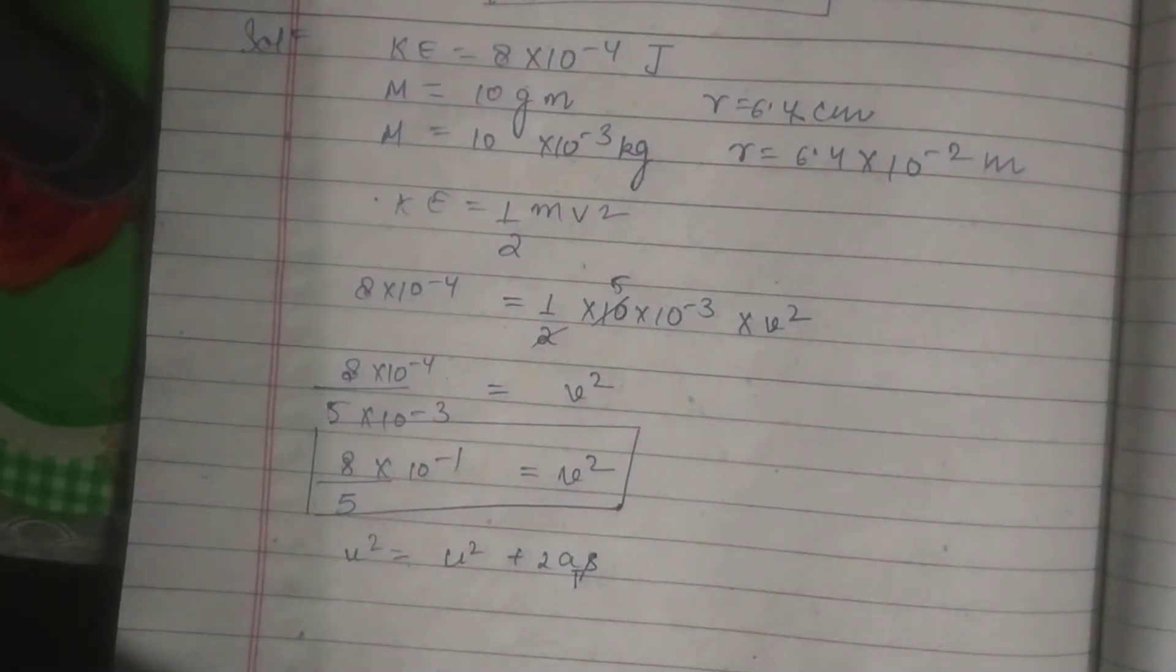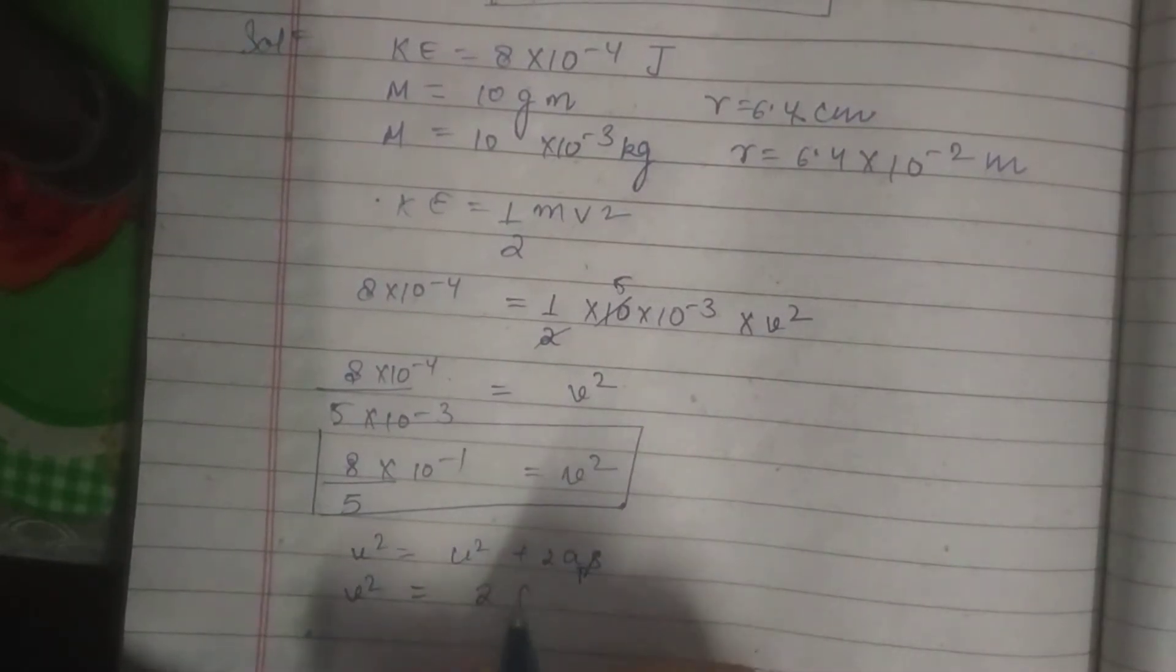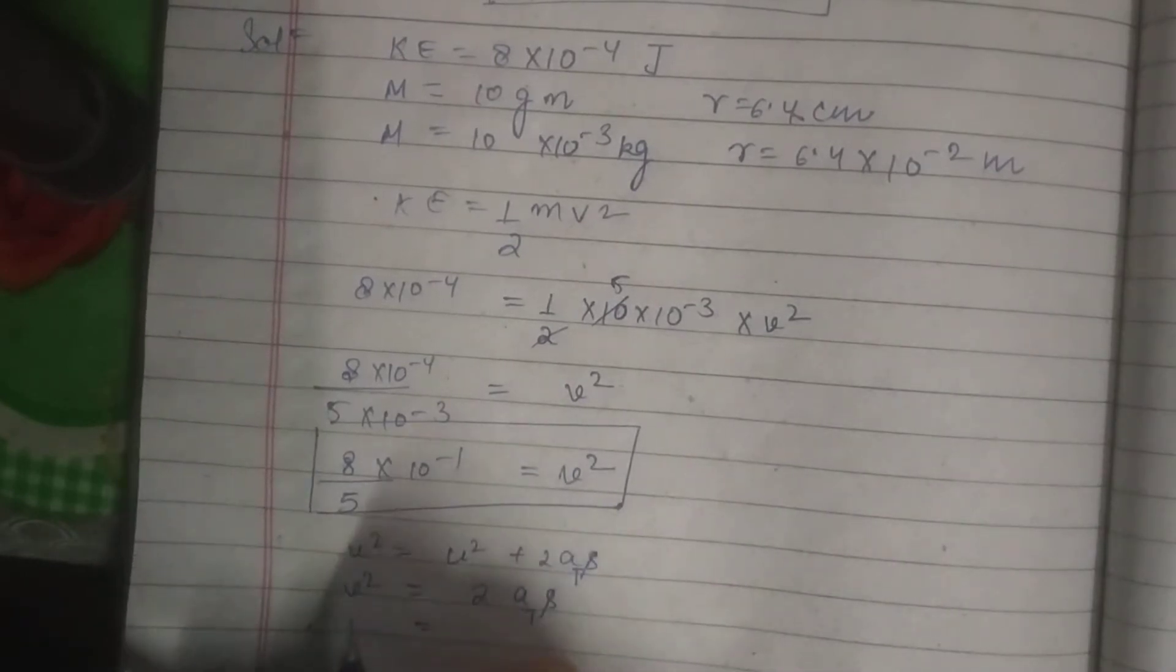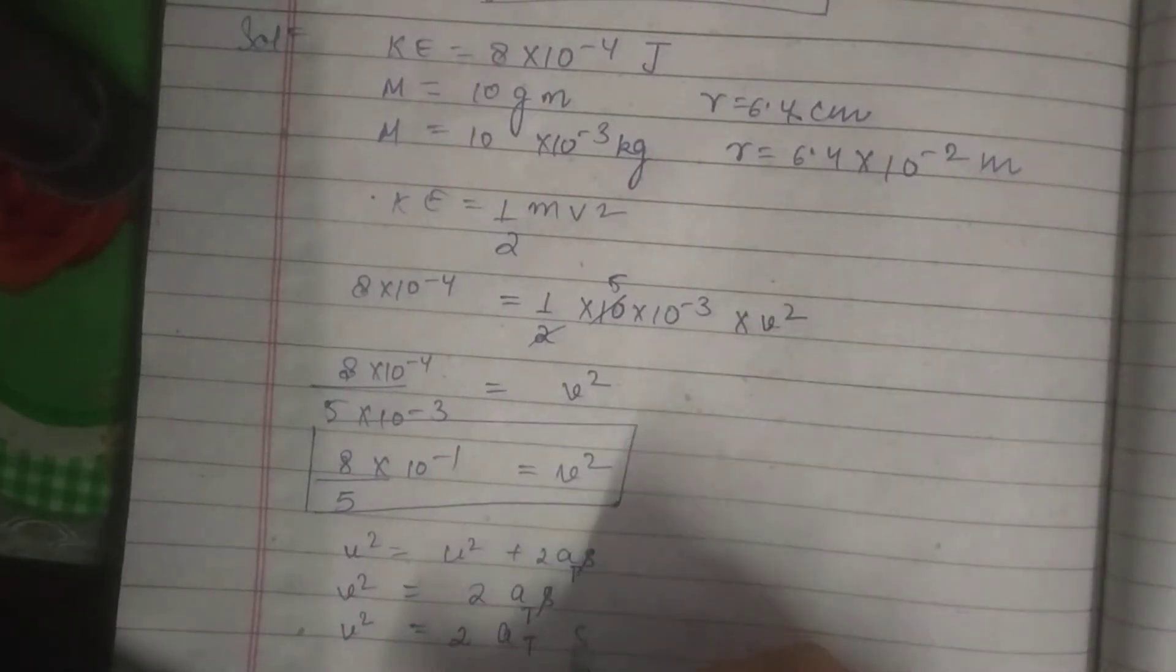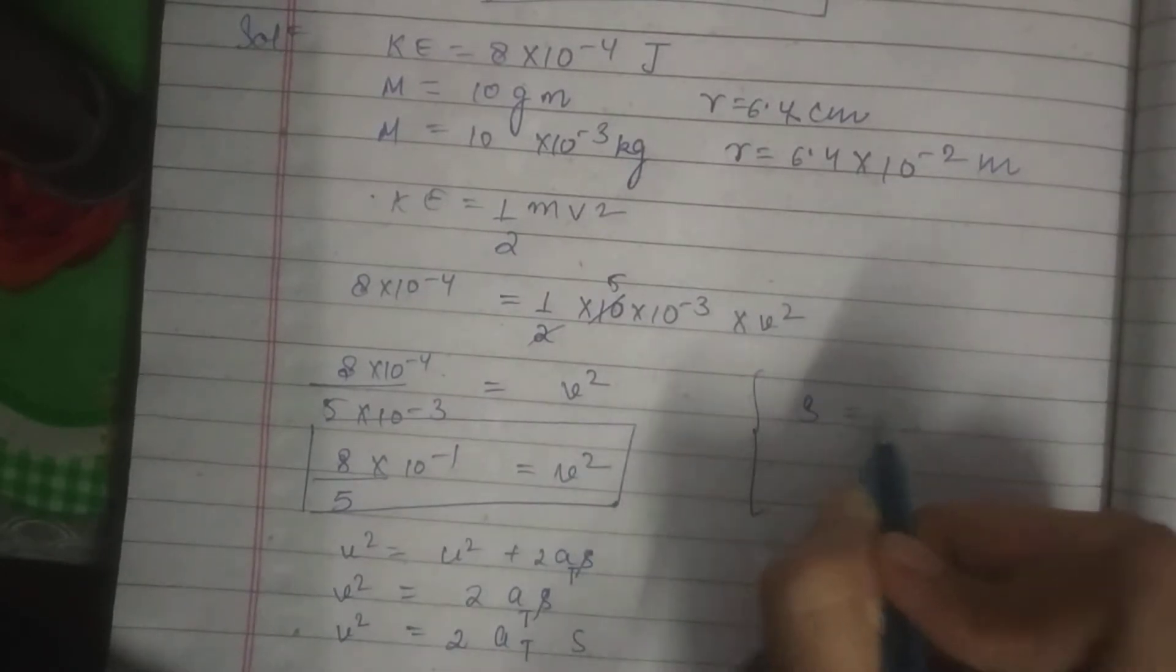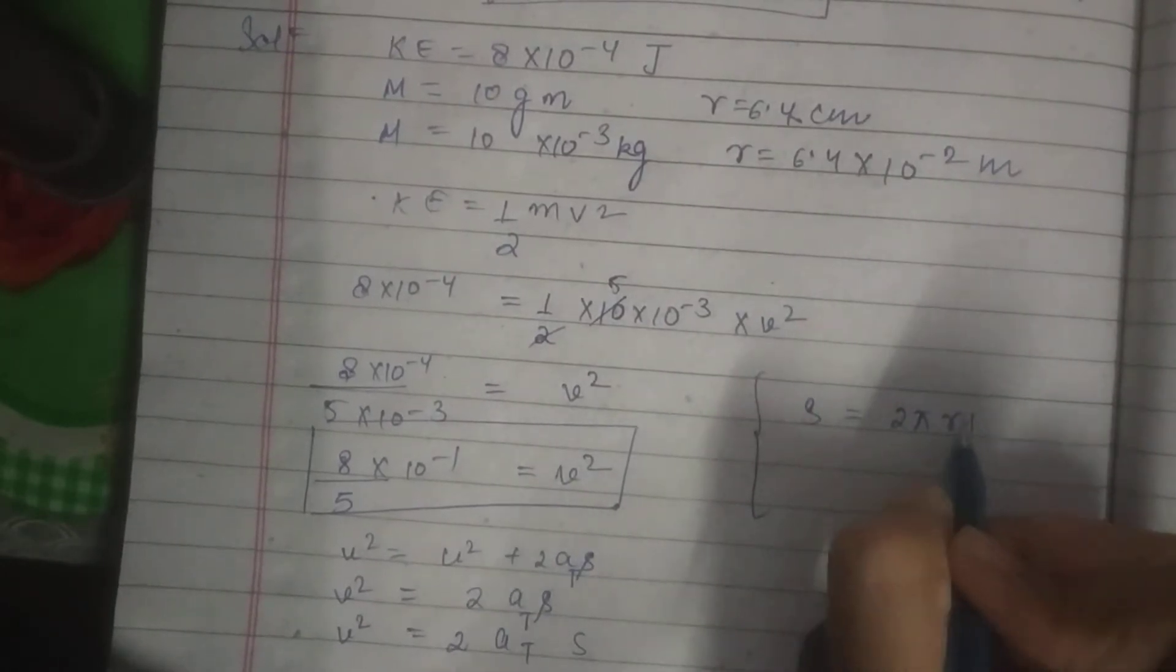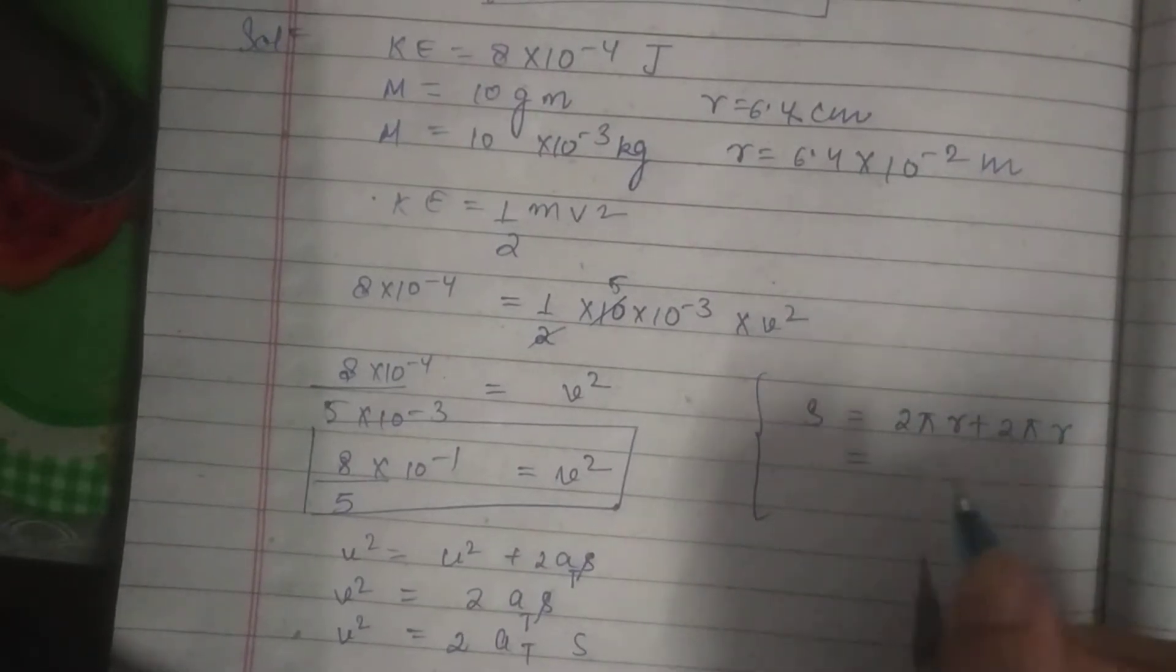Now we will find that v square is equal to 2 a s because u is equal to 0. So v square is equal to 2 a and s is equal to, what is s? Here s is equal to 2 pi r plus 2 pi r because the particle is completing 2 revolutions. So here 4 pi r.